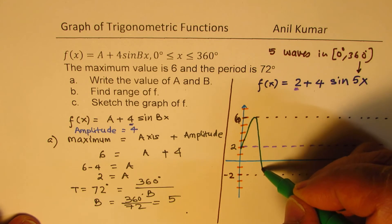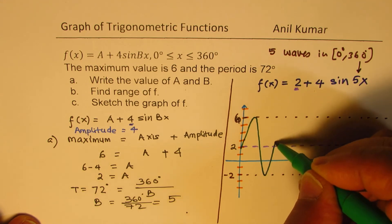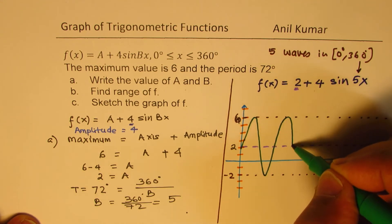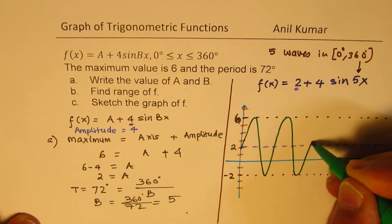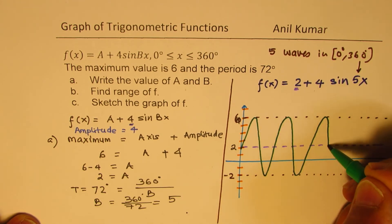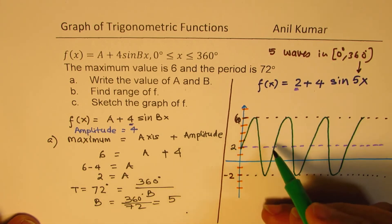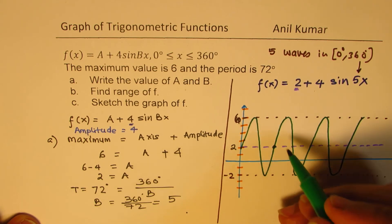So, we can sketch a sine function from the given information and get the result. Since the space is very less here, I will just sketch a wave here and then label later. So, we have 1 wave going like this, do you see that? 1 wave and then 2nd, 3rd.